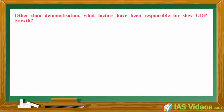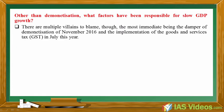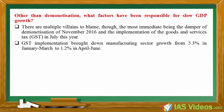Other than demonetization, what factors have been responsible for slow GDP growth? There are multiple villains to blame, though the most immediate being the damper of demonetization of November 2016 and the implementation of the Goods and Services Tax in July this year. GST implementation brought down manufacturing sector growth from 5.3% in January–March to 1.2% in April–June.